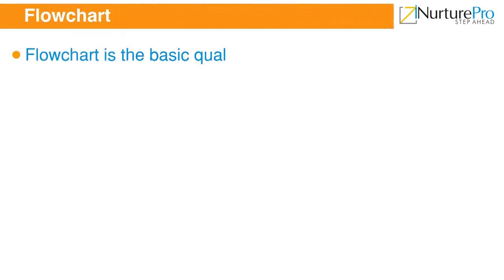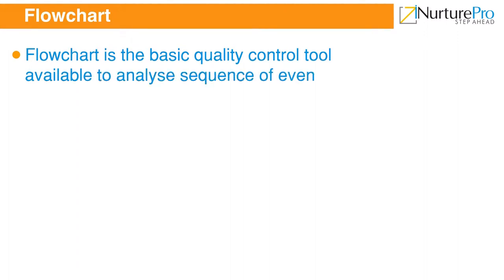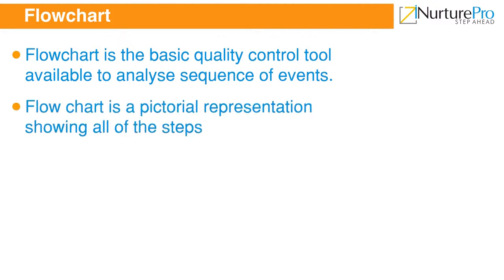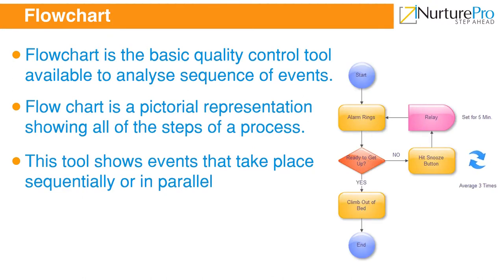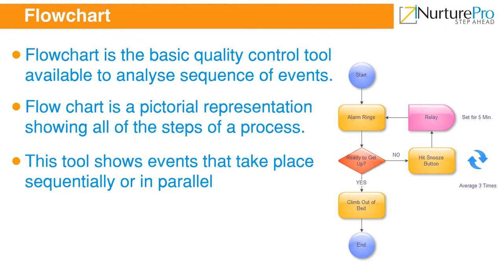Flowchart is the basic quality control tool available to analyze sequence of events. It is a visual representation of steps in a manufacturing or service process. This tool shows events that take place sequentially or in parallel. Flowcharts must reflect the actual process carried out rather than the ideal process, and can be created by consulting operators concerned with it. Differences between actual and expected processes help detect elements that do not add value, unnecessary steps, delays, and bottlenecks.